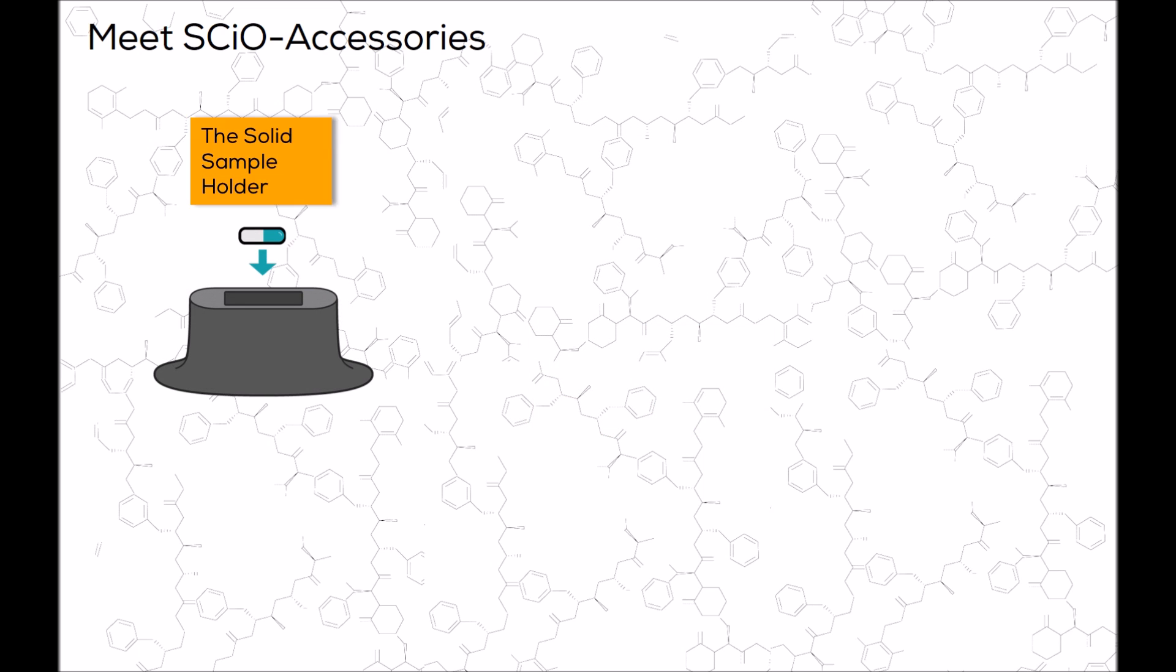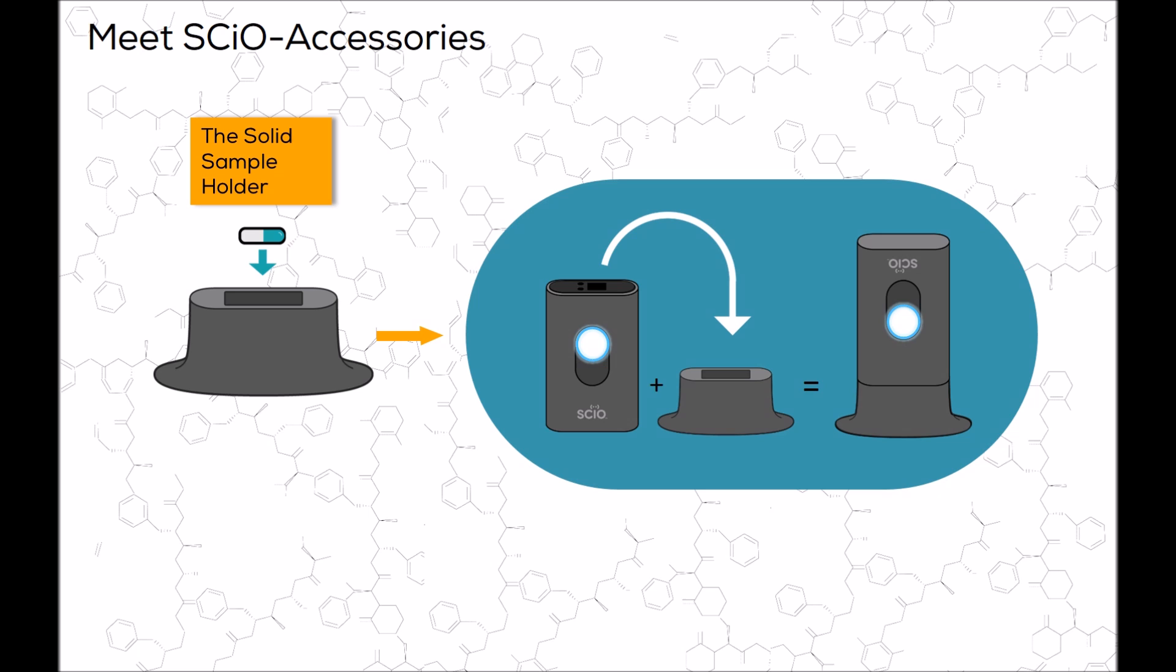The next accessory in your box is the solid sample holder. As the name suggests, this holder is to be used with small, completely solid, dry samples. Place the small sample into the holder cavity, and then place your SCiO on top of the holder, with the sensor facing into the cavity. Built-in magnets will hold it in place. To scan, tap scan within the SCiO lab app, or press the SCiO function button.